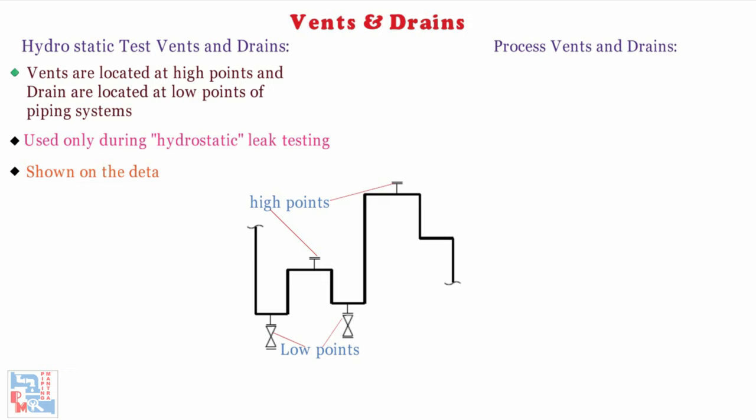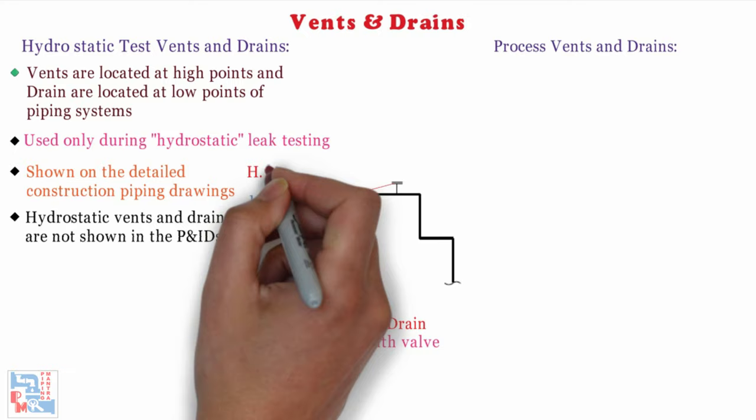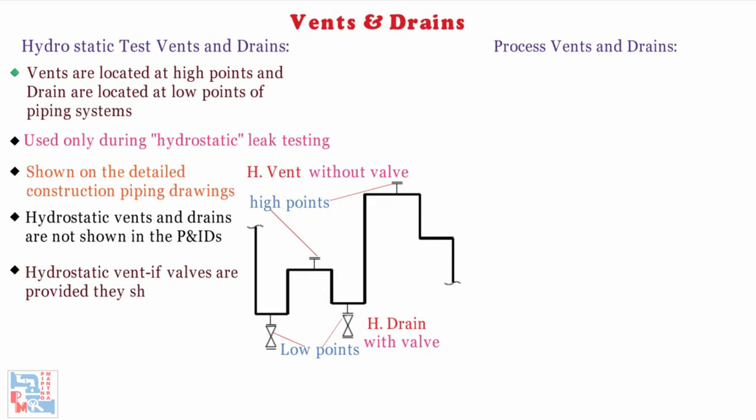Generally, hydrostatic vents and drains are not shown in the P&ID. Hydrostatic drains are provided with valves and hydrostatic vents are normally without valves. However, if valves are provided, they shall be shown in the P&IDs. Hydrostatic vents and drains which are to be marked on P&IDs should be tagged as HV and HD respectively to differentiate from the process vents and drains if required to be shown.